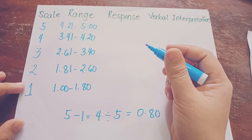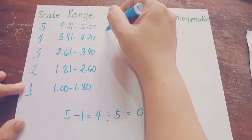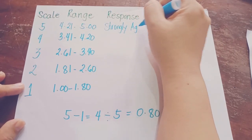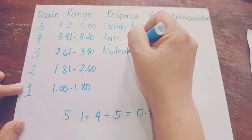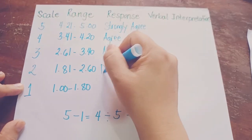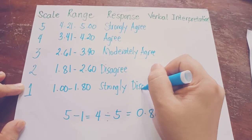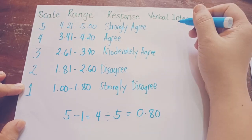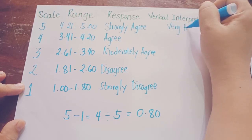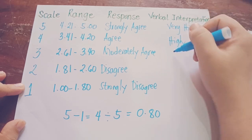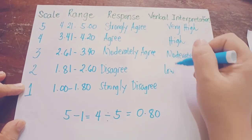For the possible responses to each statement in the survey questionnaire, you may use: strongly agree for the highest point scale, then agree, moderately agree, disagree, and strongly disagree. For the verbal interpretation, since you are evaluating learner's adjustment skills, you may use: very high, high, moderately high, low, and very low.